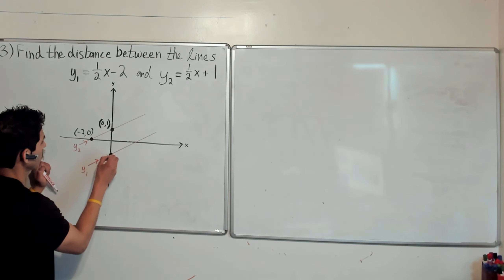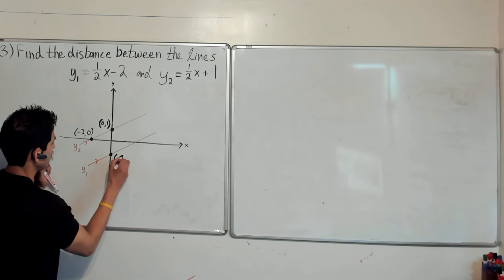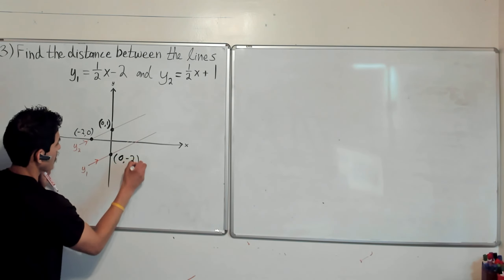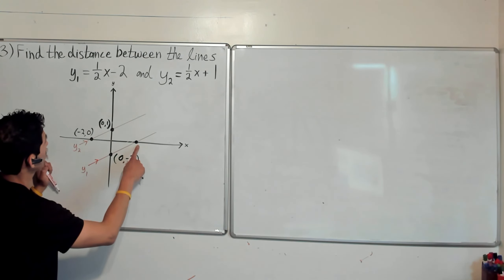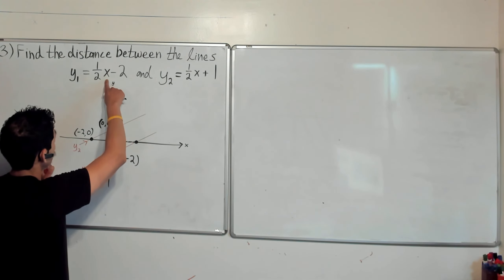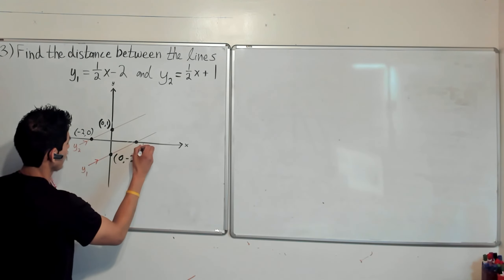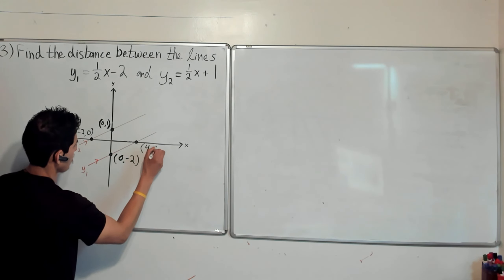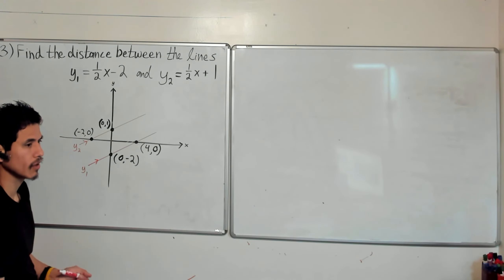And then over here, y1 will have a y-intercept of negative 2. This will be (0,-2). And then the x-intercept for this will be (4,0).